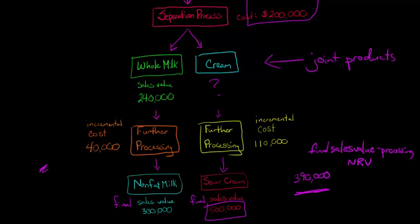And then over here, when we look at our whole milk that we transformed into nonfat milk, we've got $300,000 final sales value, so we'll take $300,000. But then we're going to subtract those costs of processing. We call these separable costs. These are separable. What we mean by separable is they're unique.